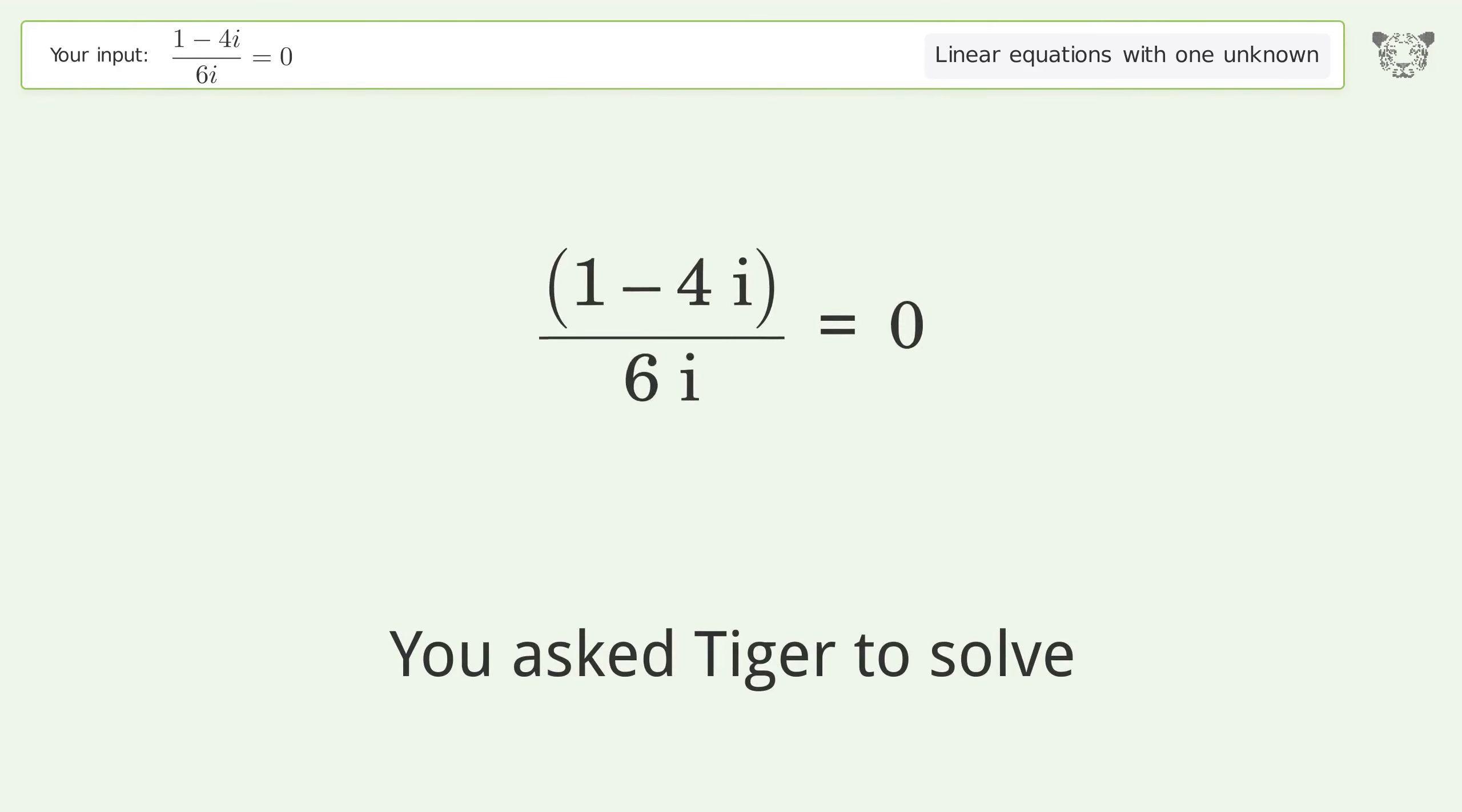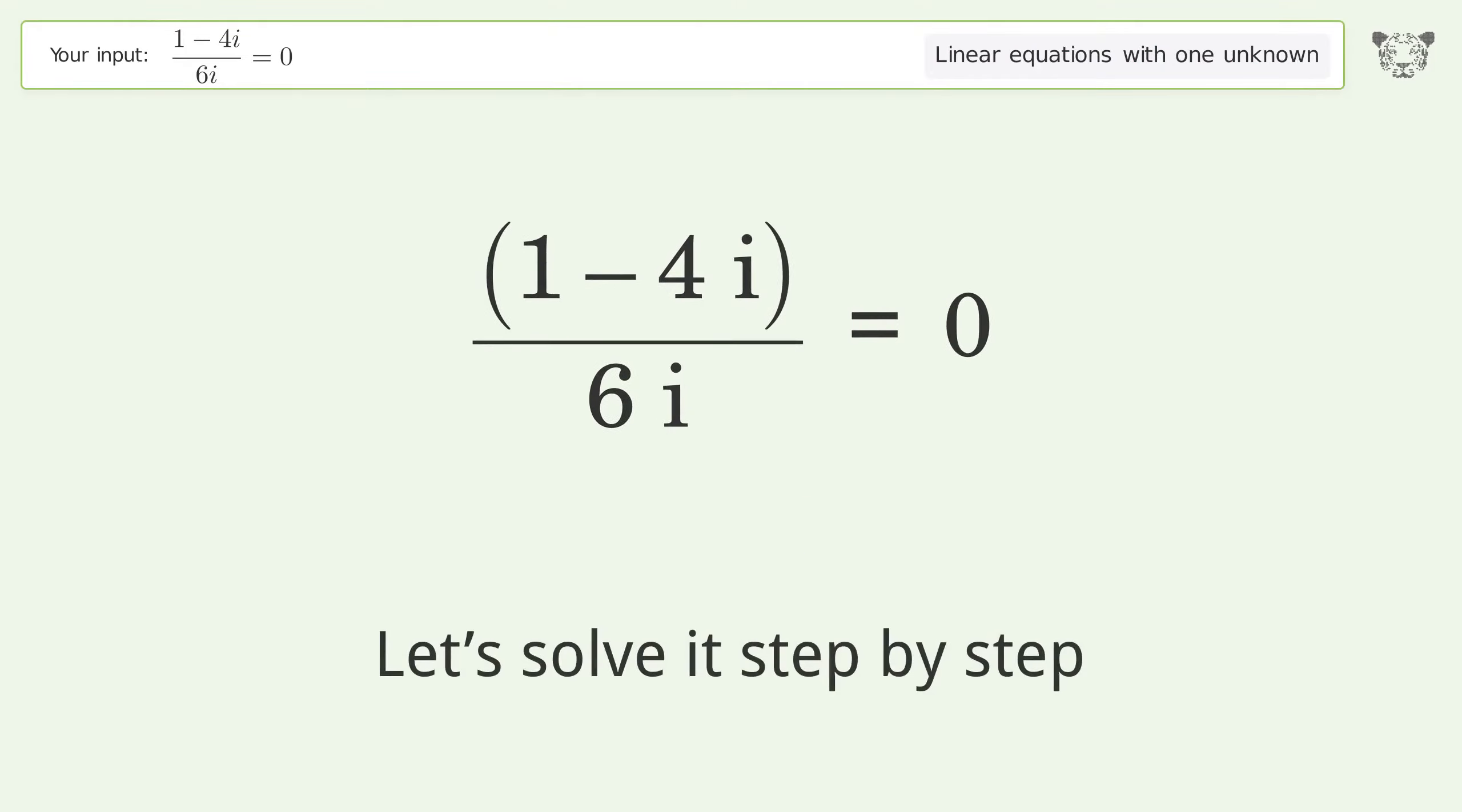You asked Tiger to solve this. This deals with linear equations with one unknown. The final result is i equals one over four. Let's solve it step by step. Simplify the expression.